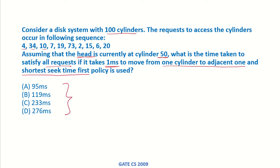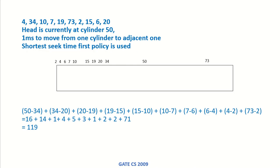So these are the 4 options that are given to us. These are the requests for the cylinders and we know that the head is currently at cylinder 50, 1 millisecond is required to move from one cylinder to the next one, and shortest seek time first policy is being used. So head is currently here.